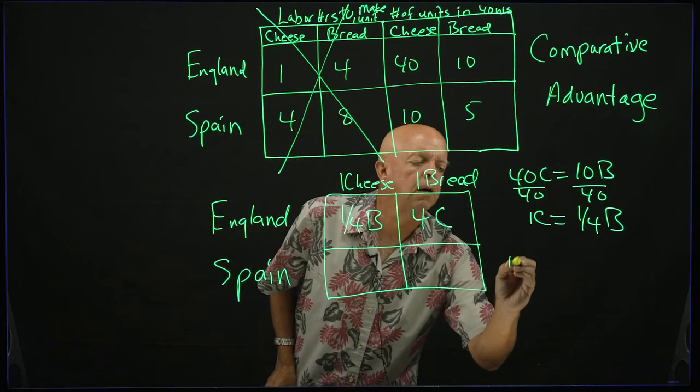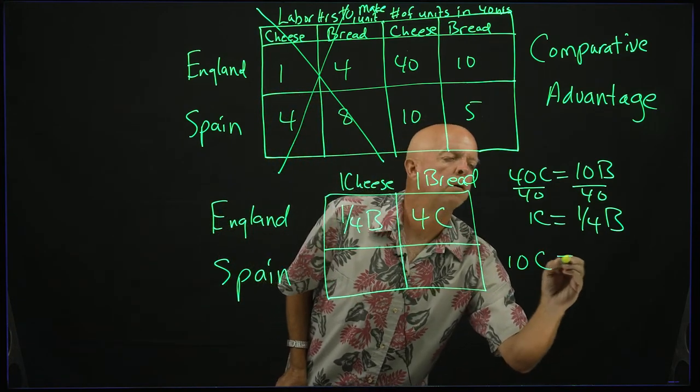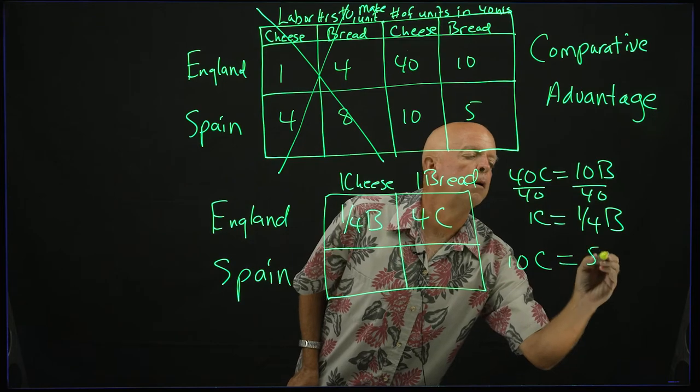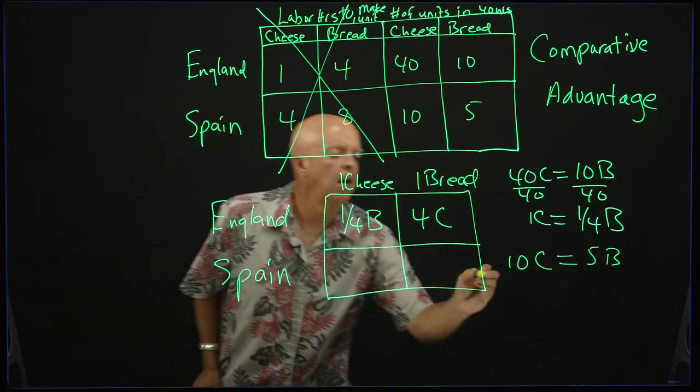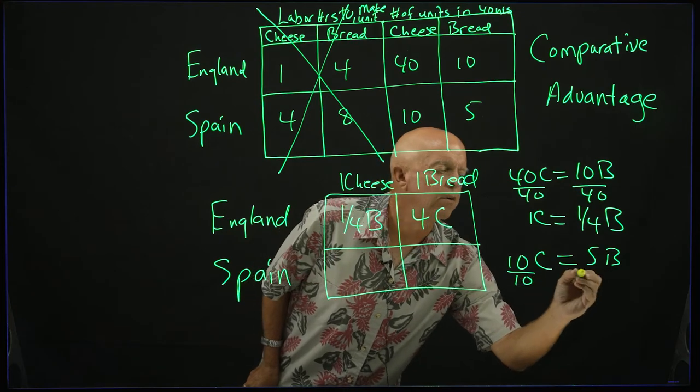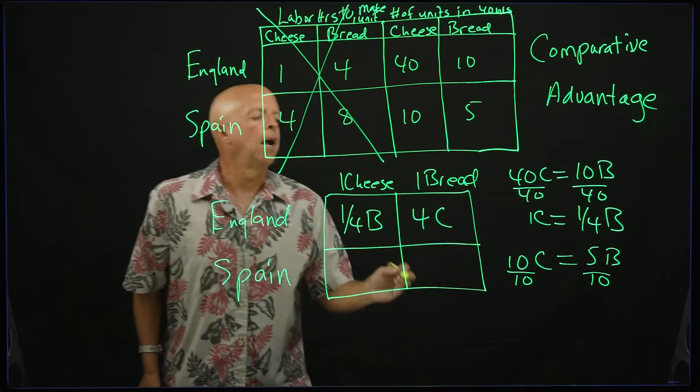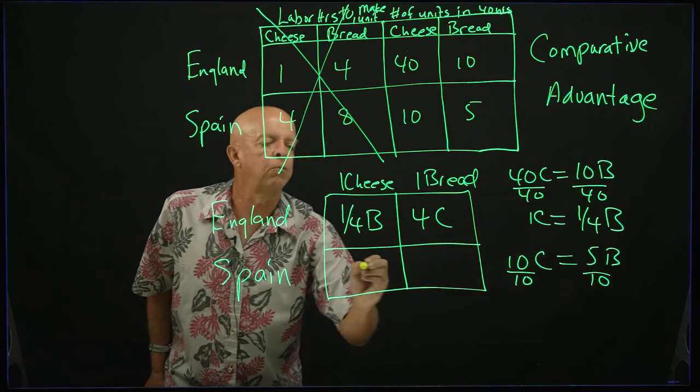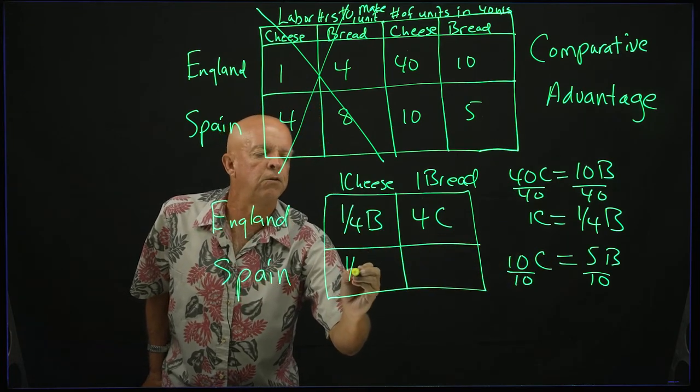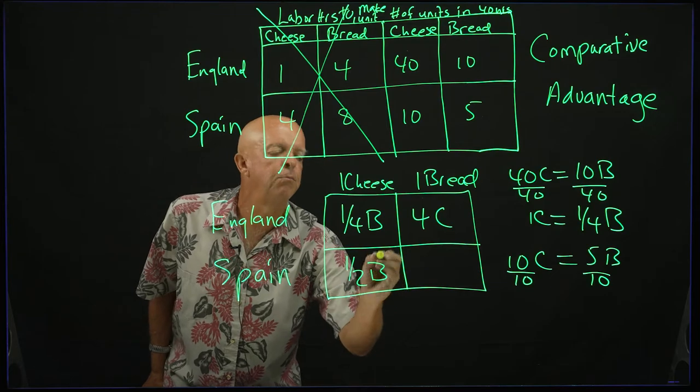This is for Spain. 5 bread. To produce one unit of cheese, you divide by 10, divide by 10. And one unit of cheese is, and this reduces, and this reduces, we always have to reduce when we're doing these types of problems, 1/2b.